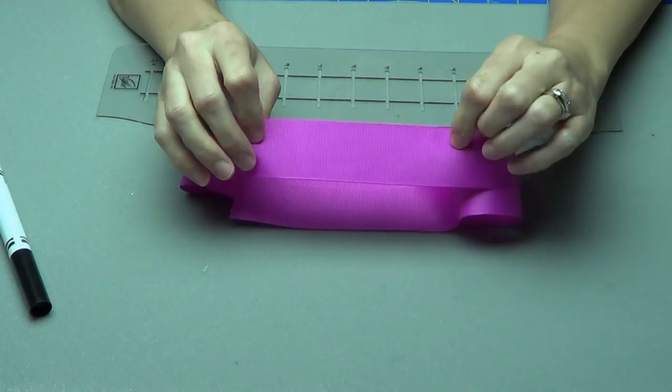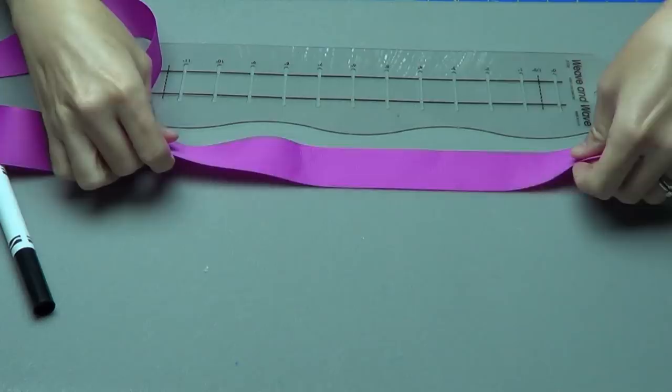For this bow I'm using 36 inches of 1 1⁄2 inch grosgrain ribbon. This is garden rose color.